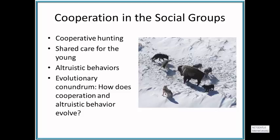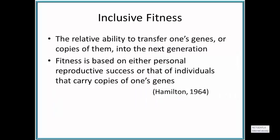If we're thinking about getting genes into the next generation and promoting our own reproductive success, how do altruistic behaviors come about? To answer that, we have to talk about fitness — the term used in genetics to describe contribution to the next generation, meaning the genes placed in the next generation. You are more fit if you put more genes in the next generation. What I just described — producing offspring and genes for the next generation — is referred to as direct fitness. There's also inclusive fitness, which is the relative ability to transfer one's genes or copies of them to the next generation.